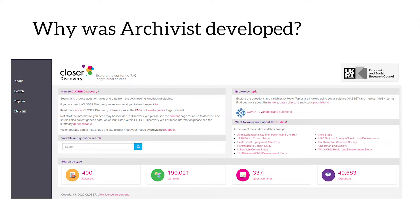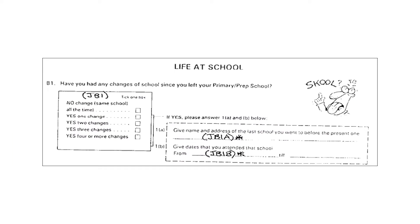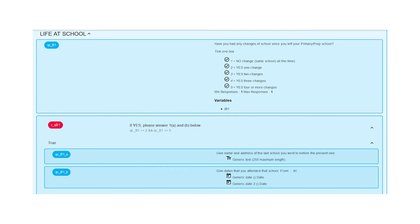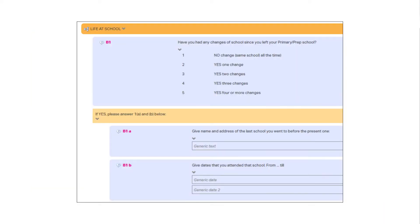This allows us to turn questionnaires from their original form — an example of which you can see on screen — to how they look in Archivist once broken down into DDI elements, and finally to how they appear in our search platform, CLOSER Discovery.